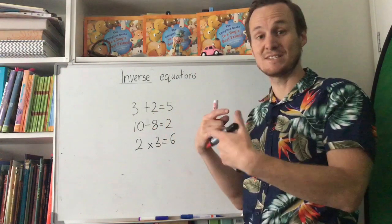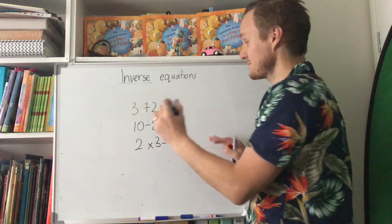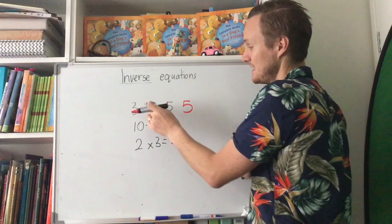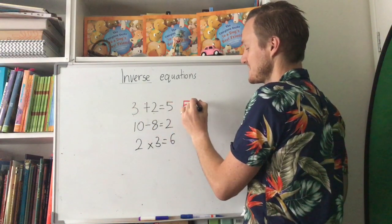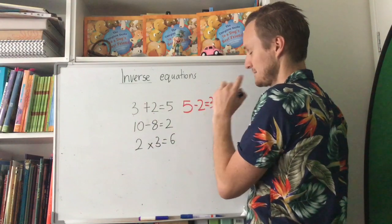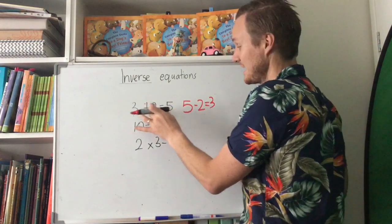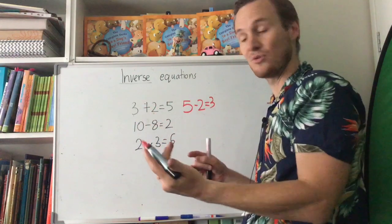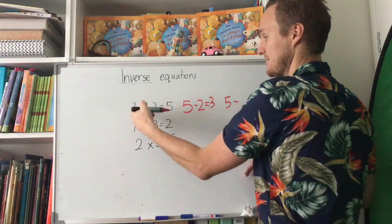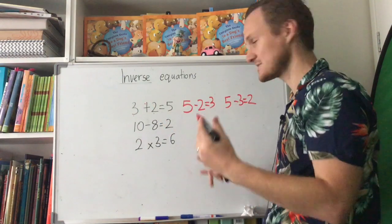So the first question is 3 plus 2 equals 5. We're going to turn it backwards using the opposite operation, so this becomes subtraction. We start with the answer: 5 take away 2 equals 3. It doesn't matter which number I choose as long as I use the answer first and use the opposite operation — it always works. I could also do 5 take away 3 equals 2.